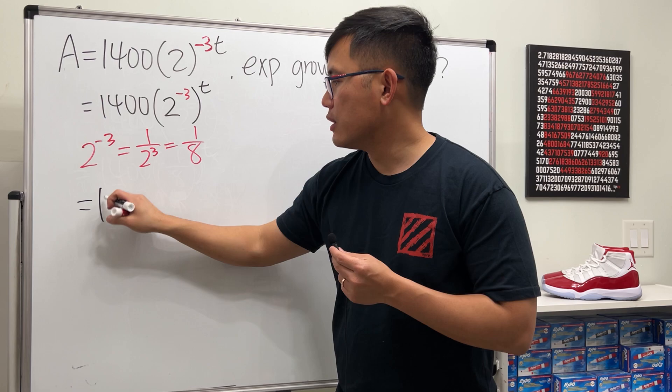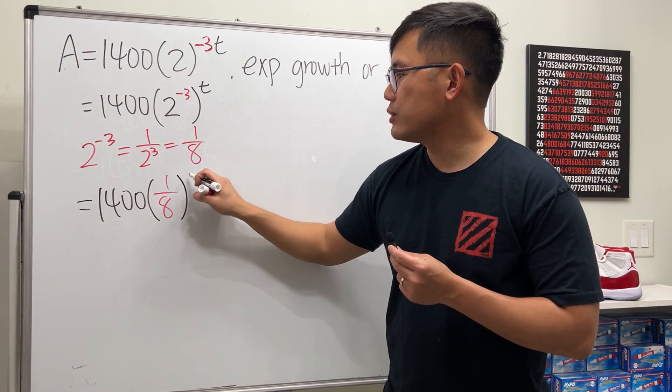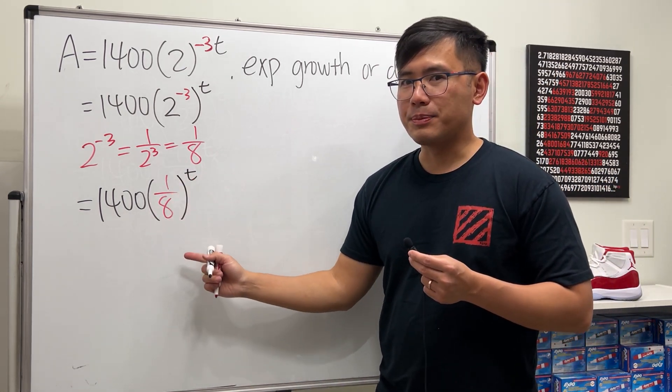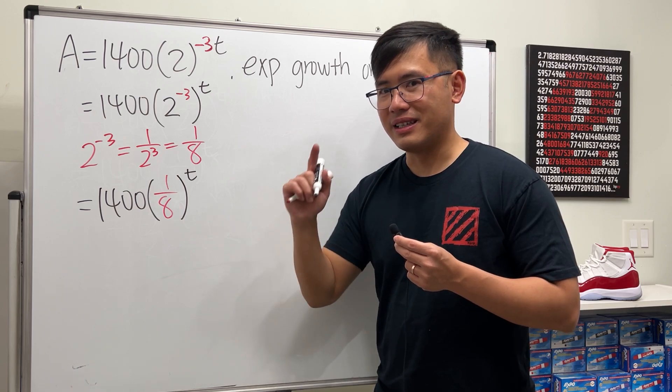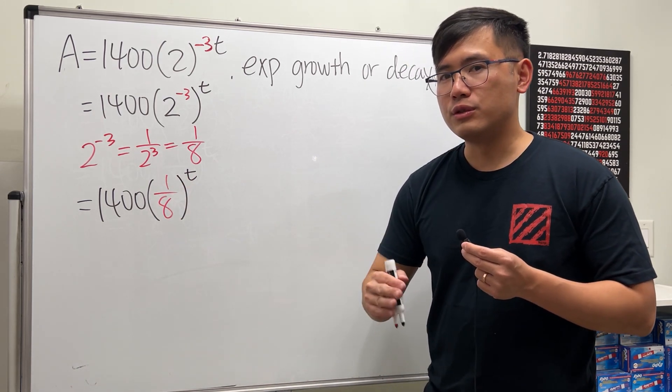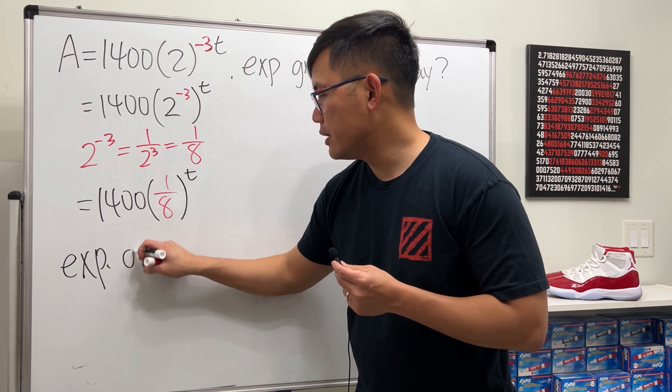So you can see this is just 1400(1/8)^t. Is this exponential growth or decay? It's decay because the base right here is between 0 and 1. Therefore, I will say this is exponential decay.